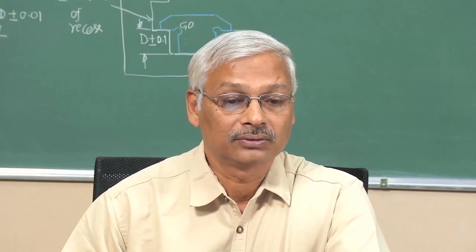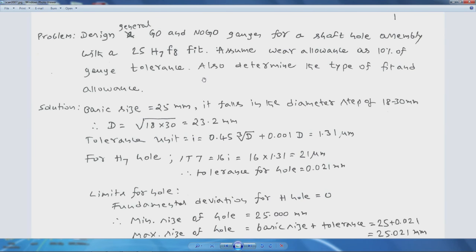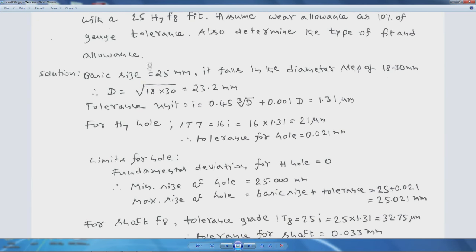Now we will take up a problem on gauge design to make the concepts clear. We have to design general type go and no-go gauges for a shaft-hole assembly with a 25 H7/F8 fit. We assume a wear allowance of 10 percent of gauge tolerance and also determine the type of fit and allowance.